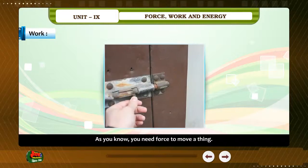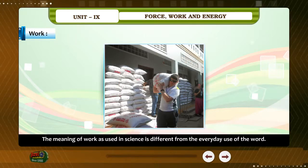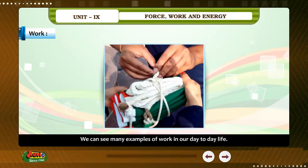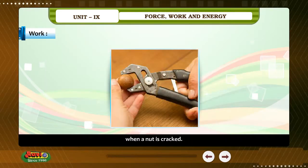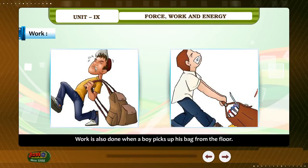Work. As you know, you need force to move a thing. When a force is used to move an object through a distance, we say that work is done. The meaning of work as used in science is different from the everyday use of the word. Work is said to be done when the force — pull or push — moves a body through a distance. Work is done when a load is lifted, when you open or shut the door, when a flag is hoisted, when a nut is cracked, and when a boy picks up his bag from the floor.